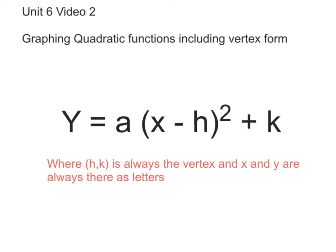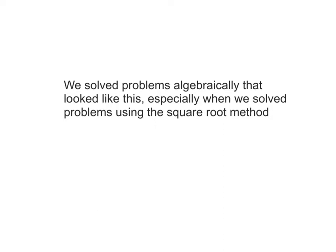Unit 6, video 2: graphing quadratic functions including vertex form. Here's our vertex form: y equals a times (x minus h) squared plus k, where (h, k) is always the vertex and x and y are always there as letters. We solved problems algebraically that looked like this, especially when we solved problems using the square root method. Our steps are basically the same as when we graphed before — we're just looking at a different equation style.